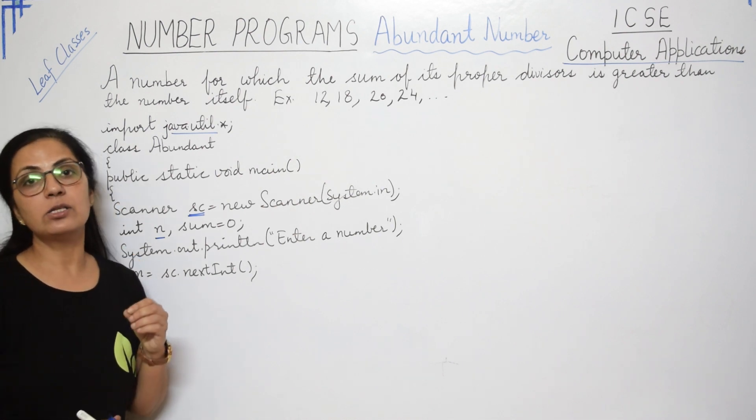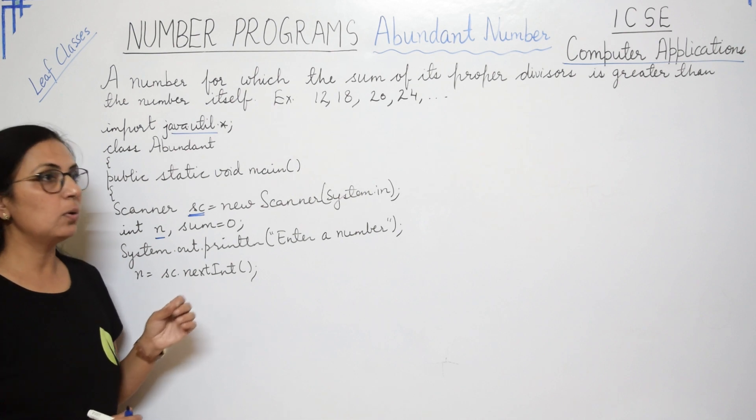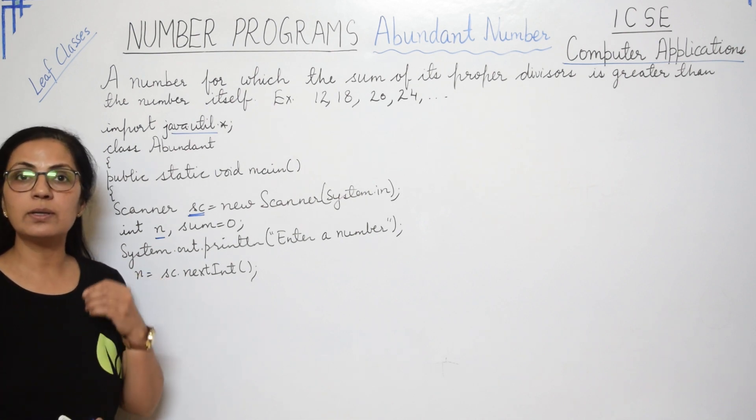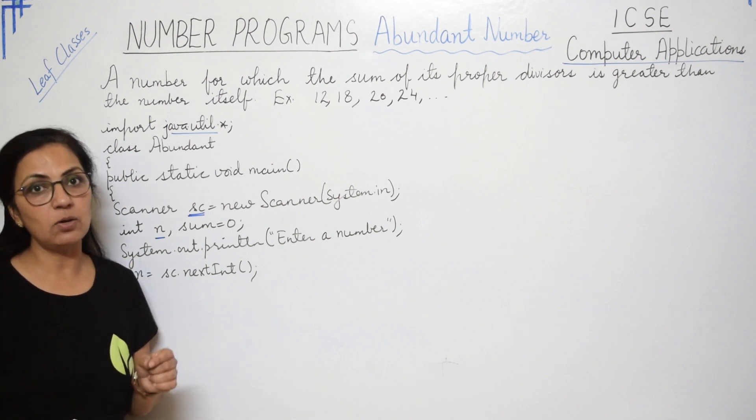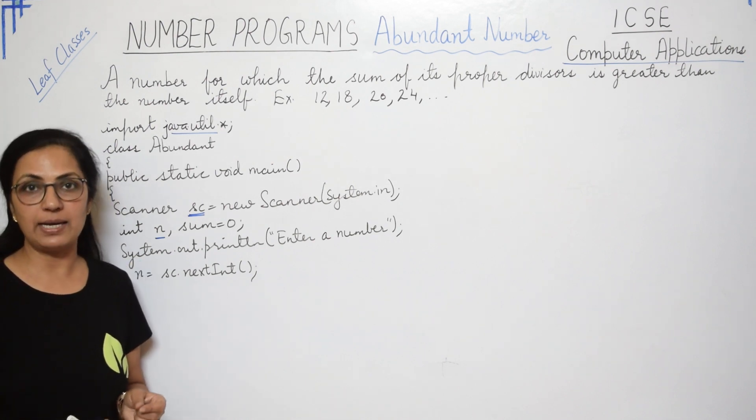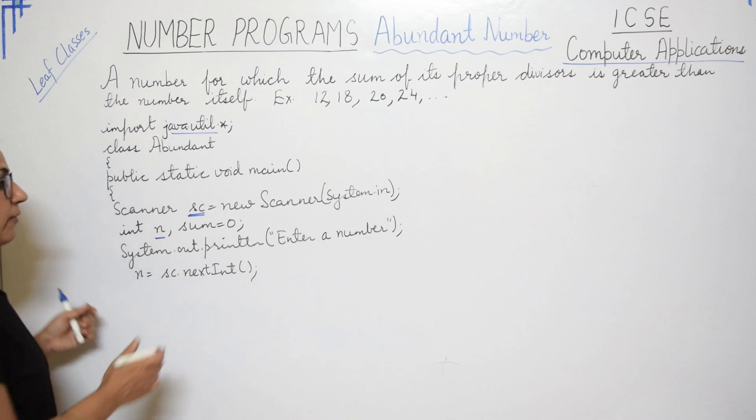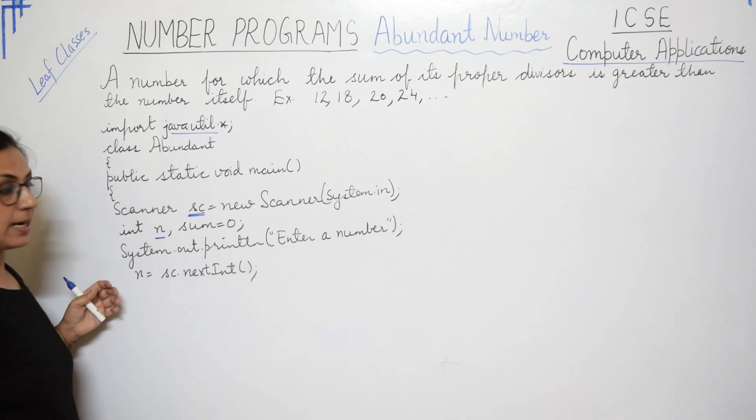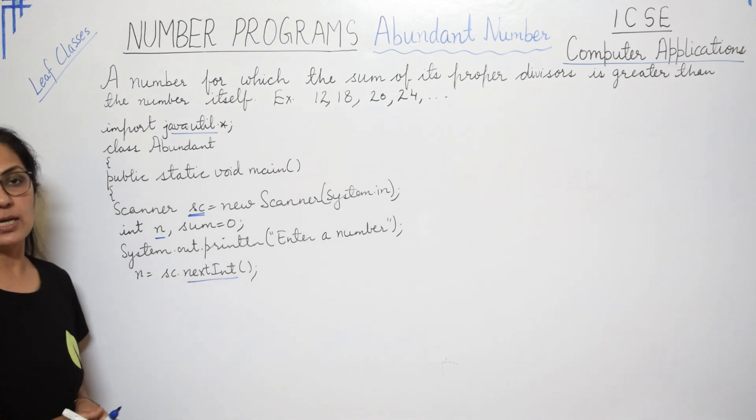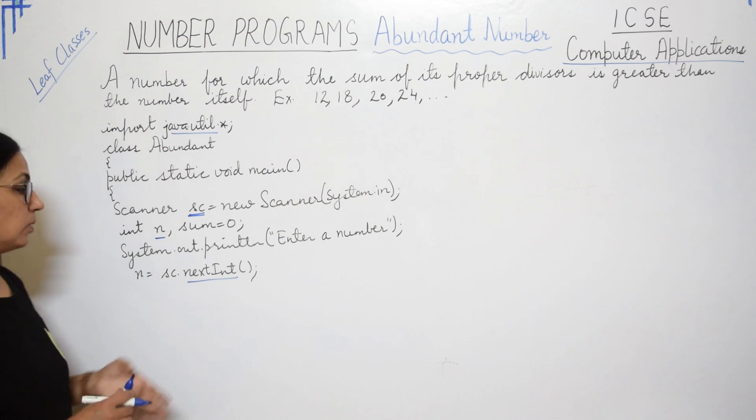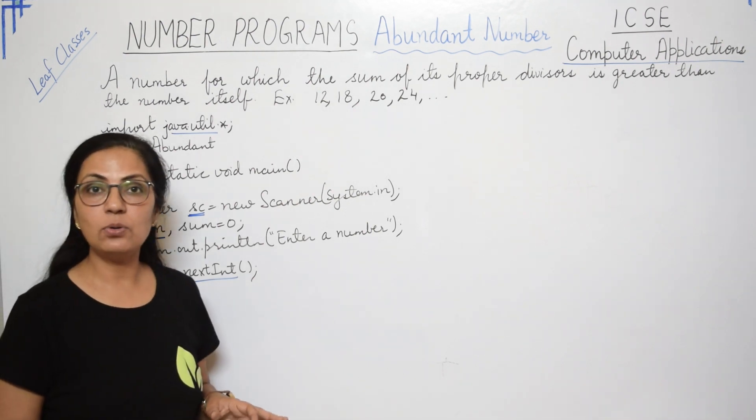Then we have taken one variable n of int type. And one variable sum, also of int type. And the sum is initialized by 0, because we want to store the addition result in that. So children, wherever we want to store the addition result, we have to initialize it by 0, because 0 is additive identity. So after this we have given the message 'Enter a number'. And n equals to sc.nextint. This function is used to input integer type values.